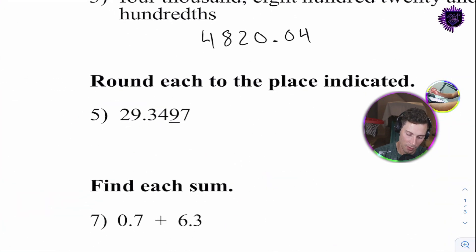Round to each, to round each to the place indicated. So, this one's rounded to the thousandths. So, we're simply going to write it as twenty-nine, point, three, four, ooh, point, three, five, zero.